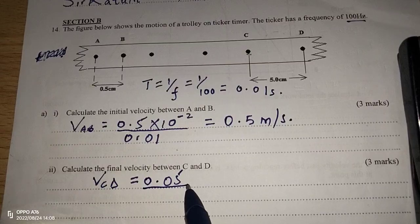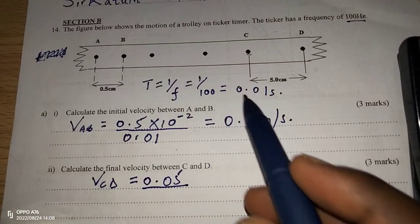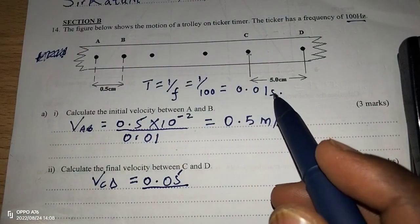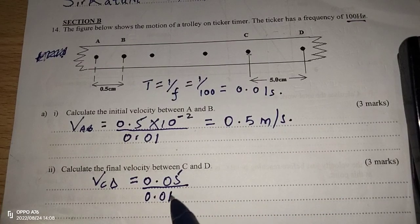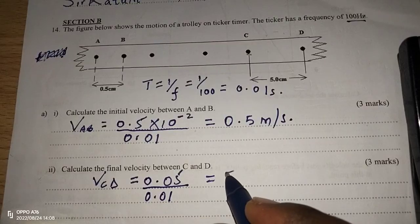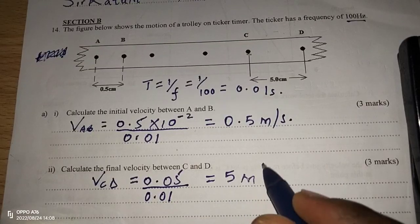Then, now we divide by time. The time is again going to be 0.01 because it is the periodic time, or rather the time from one dot to the next. This is going to make 5 meters per second.